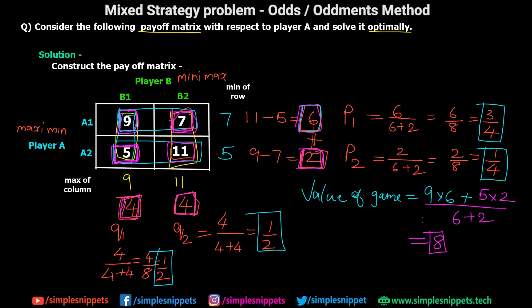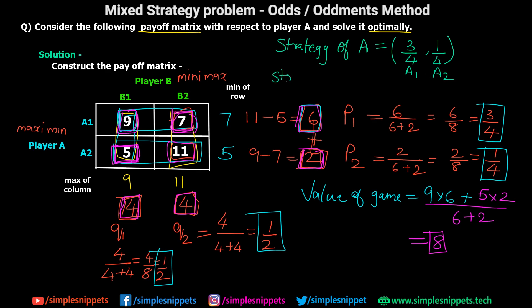We've reached our final answer. The strategy for A is (3/4, 1/4) — meaning A1 with probability 3/4 and A2 with probability 1/4. The strategy for B is (1/2, 1/2) — B1 and B2 each with probability 1/2. These can also be expressed as 0.75 and 0.25. The probability values always range between 0 and 1. The value of the game is 8.